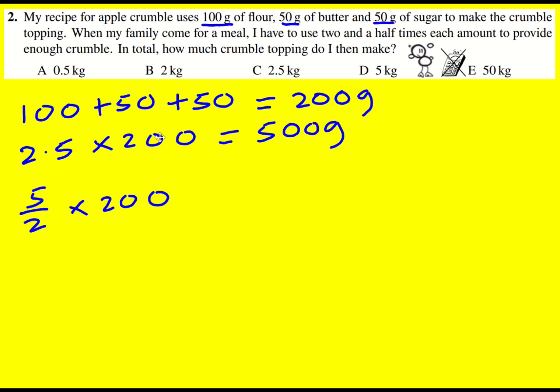You could even instead of 2.5 times 200 change it to 25 by timesing this by 10 times 20. Or even 25 times 2 times 10. And you can do it in what order you want, so 25 times 2 is 50, 50 times 10 is 500 anyway. But those are just a few different methods.